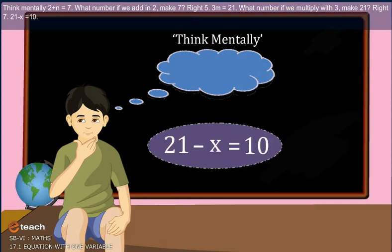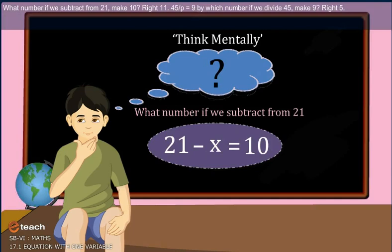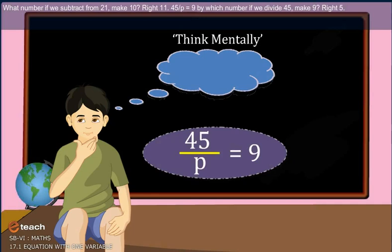21 minus x is equal to 10. What number if we subtract from 21, make 10? Right, 11. 45 upon p is equal to 9. By which number we divide 45, make 9? Come on! Right, it's 5.